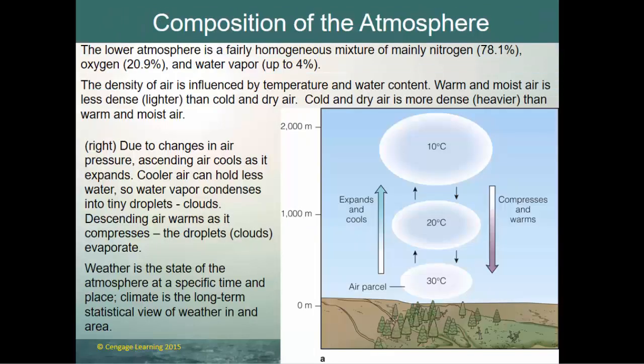The lower atmosphere is fairly homogeneous — a mixture of nitrogen, oxygen, and water vapor. Density is mass divided by unit volume. For example, a cube of lead has more tightly packed mass than the same-sized cube of styrofoam, so lead is much denser. The density of air is influenced by temperature and water vapor content: warm and moist air is less dense than cold and dry air.